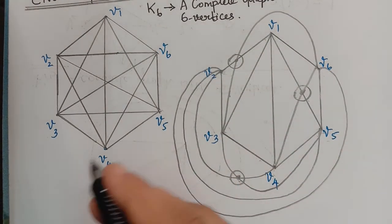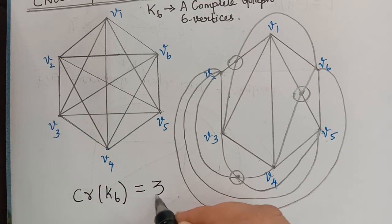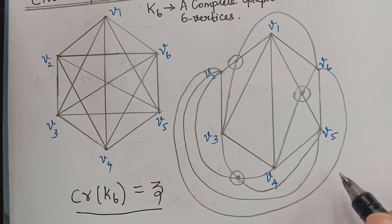Therefore, the crossing number of K6 is equal to 3. Hope you have understood this. Thank you.